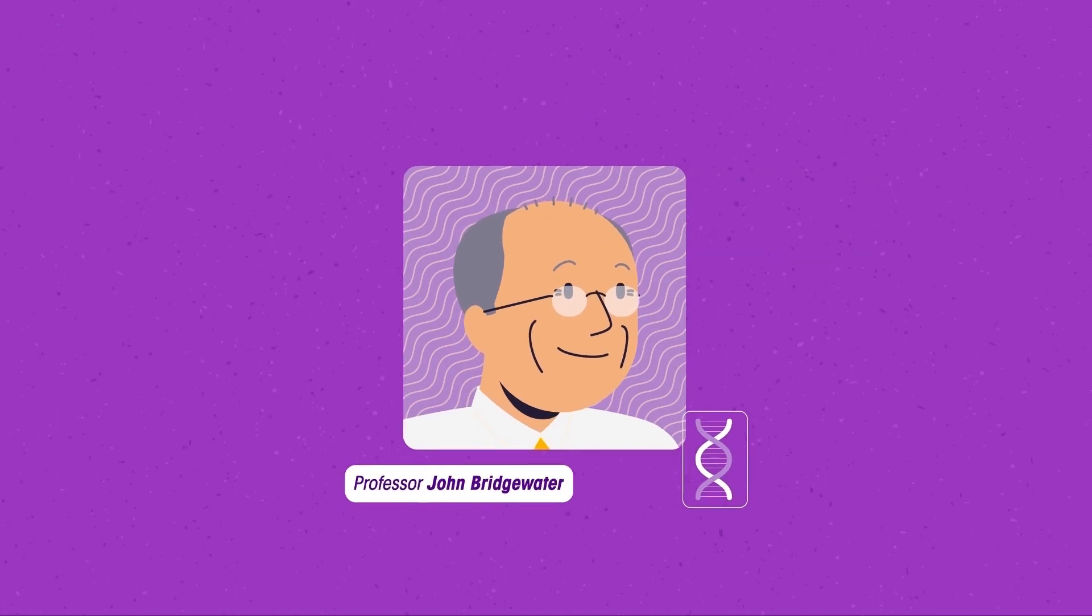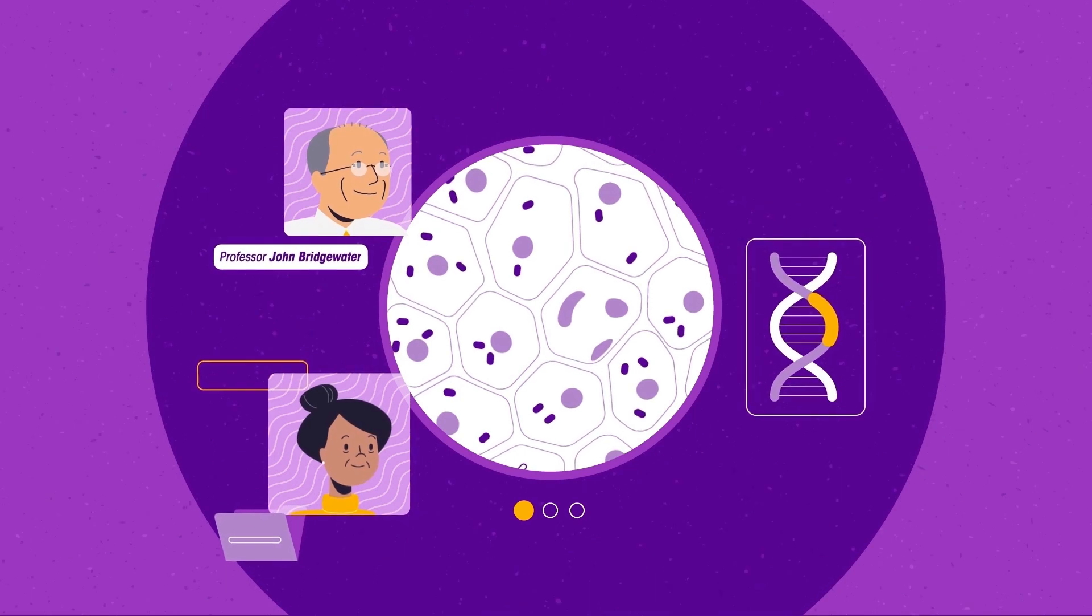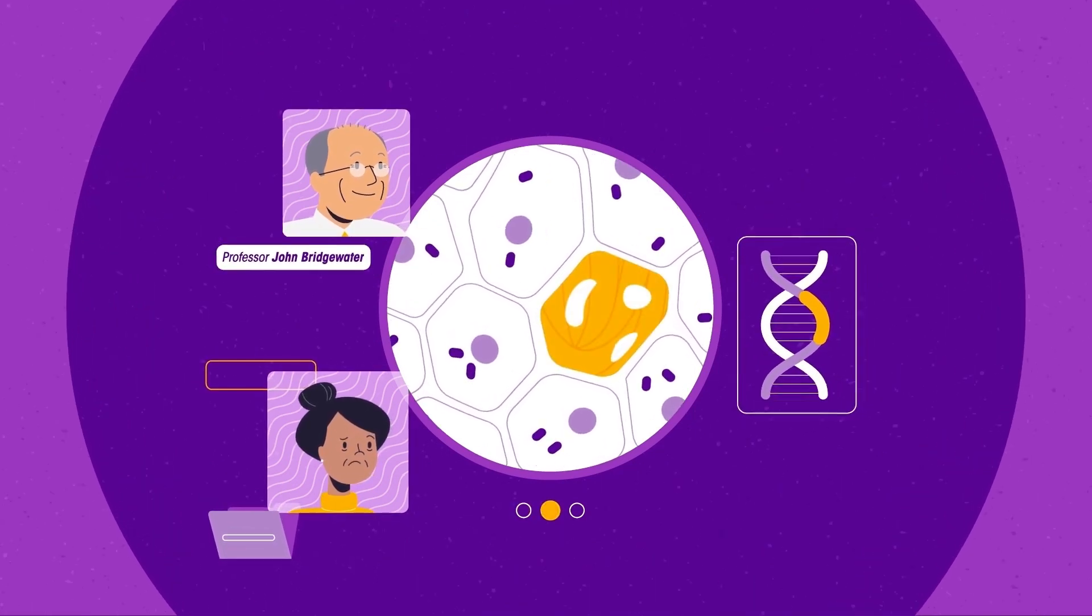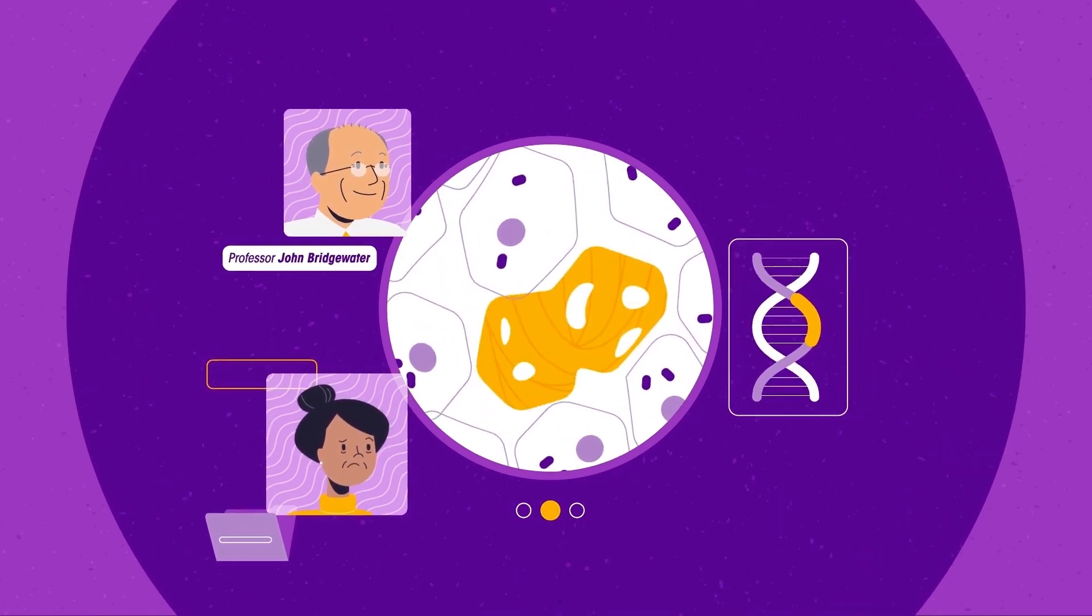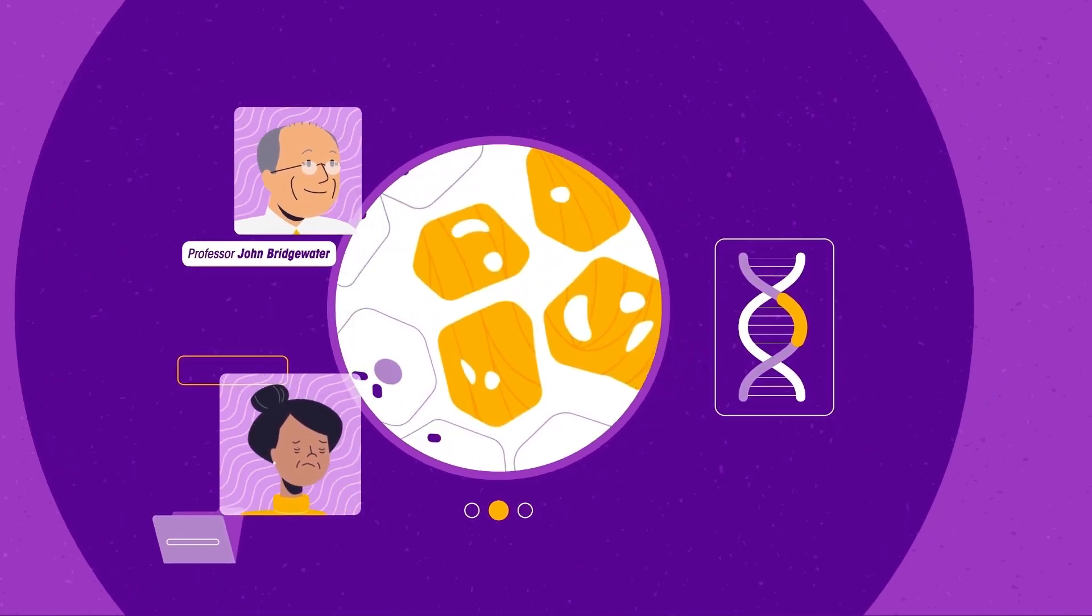The cells in our bodies are constantly dividing. Sometimes when certain genes in the cells change and become faulty, for example when mutations occur, it can drive the cells to grow out of control. This is how cancer is formed.